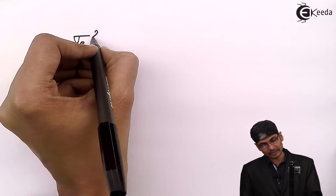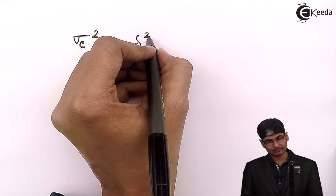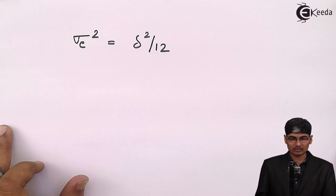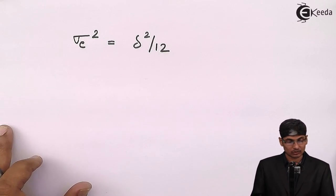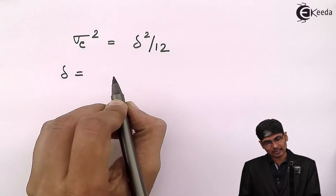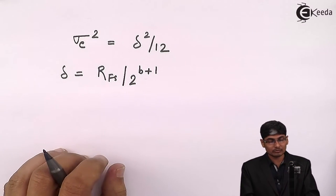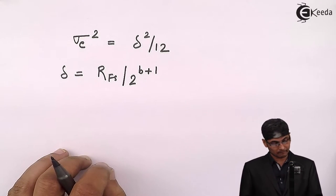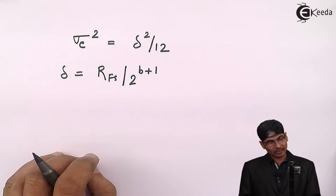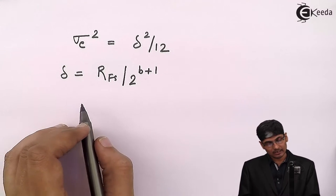So what is going to happen is I can use lower bits — that means low resolution — and still provide a good quantizer. The variance of a quantizer, or the error variance due to the quantization process, is given as sigma e squared, which equals delta squared divided by 12. And delta depends on the full scale range, which is R_FS divided by 2 raised to b plus 1, where 2 raised to b plus 1 is the number of bits used to represent the fractional number.